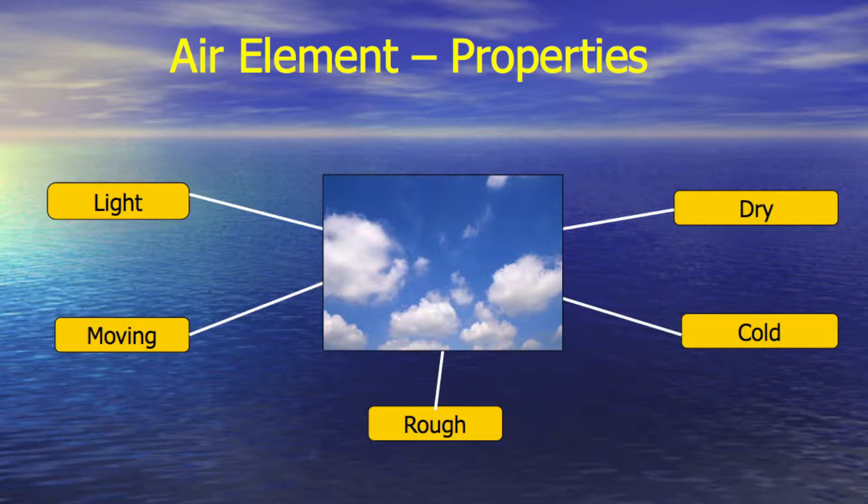Air is dry by its own nature — there is nothing to make it moist. It is also rough and cold on its own. However, because of movement, if wind is coming from a hot area it will be hot, and if from a cold region it will be cold. But the basic inherent qualities of air are cold, dry, rough, and light.